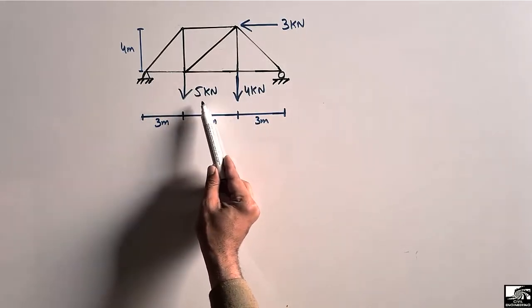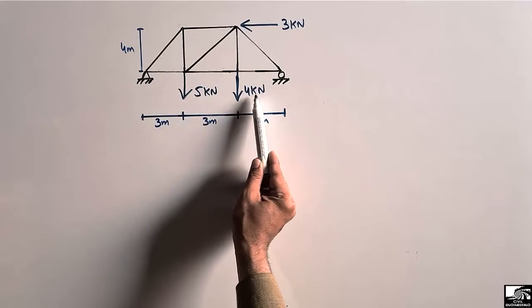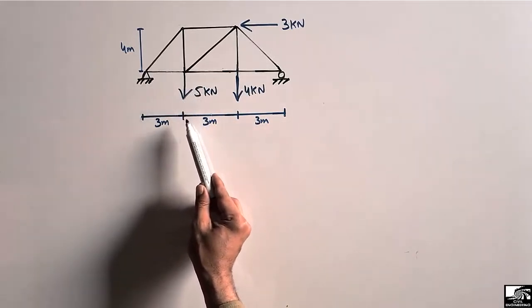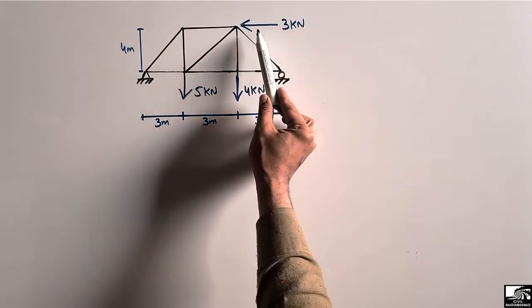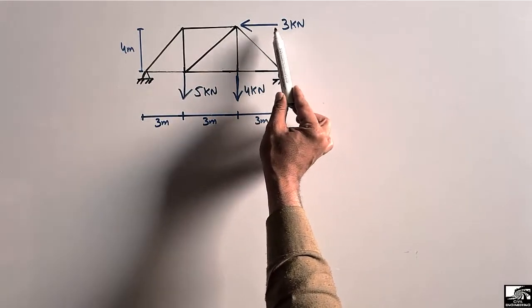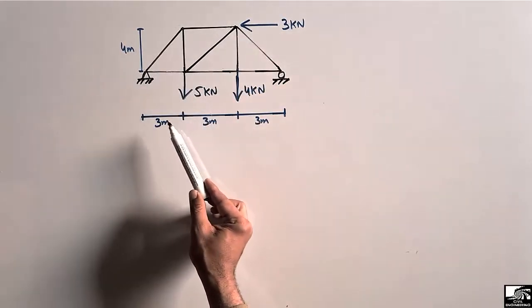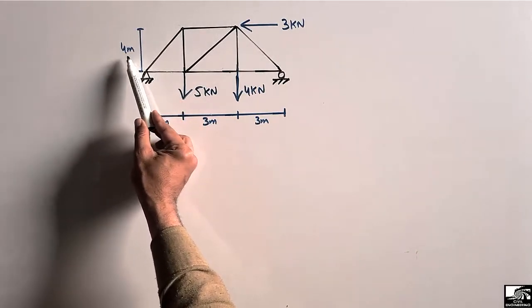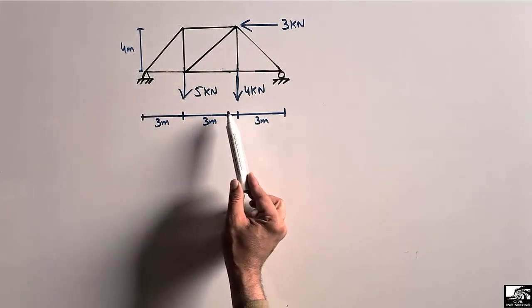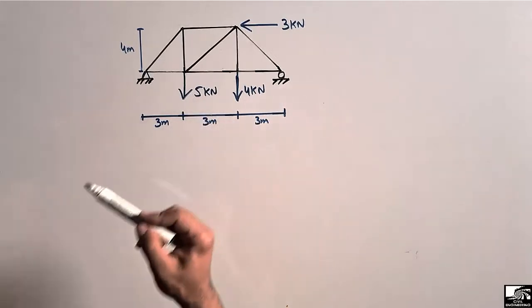The loads are 5 kN and 4 kN acting in the vertical downward direction, and there is a horizontal lateral load of 3 kN acting horizontally. The height of this truss is 4 meters, while the horizontal dimension is also given.